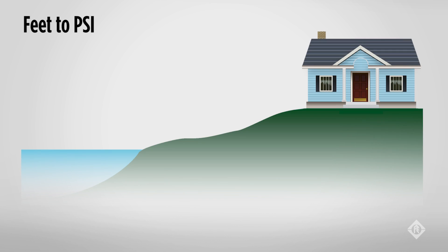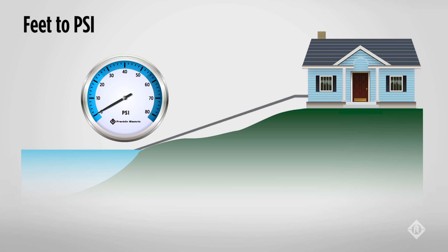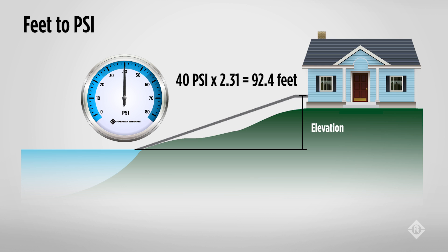Let's put this knowledge to practical use. Say we have a lake cottage on top of a bank and want to know how much pressure our pump will need to push water to the top of the hill. We don't have time or money for a surveyor, but we still need to know the elevation change from lake level to the cottage. If we take a garden hose or tube, run it up the hill, put a pressure gauge at the bottom, and fill the hose with water, we can determine the elevation. If the gauge reads 40 psi when the hose is filled, we know the elevation is 92.4 feet — simply 40 psi times 2.31 equals 92.4 feet. This is not distance but feet of head; we may have run 1,000 feet of hose to rise 92.4 feet, but either way we have 40 psi to overcome to pump water to the top of the hill.